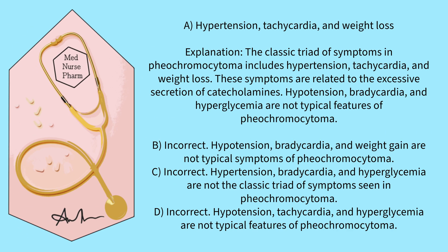Hypertension, tachycardia, and weight loss. The classic triad of symptoms in pheochromocytoma includes hypertension, tachycardia, and weight loss. These symptoms are related to the excessive secretion of catecholamines. Hypotension, bradycardia, and hyperglycemia are not typical features of pheochromocytoma.